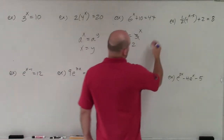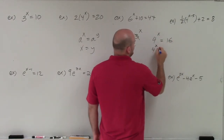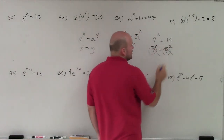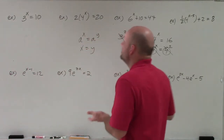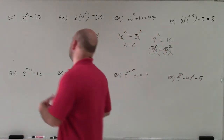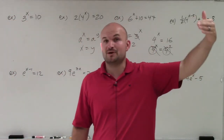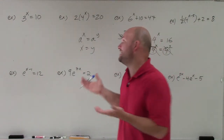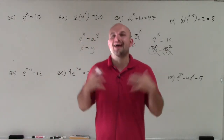Previously we had something like 4 to the x equals 16, and we rewrote the equations with the same bases. Once we had the same bases, we could just set the powers equal to each other. The problem with today's problems is that you cannot get the bases to be the same. For example, 3 to the x equals 10 — the powers of 3 are 3, 9, 27 — so I can't rewrite 10 as a base 3. Therefore, I have to use my calculator.